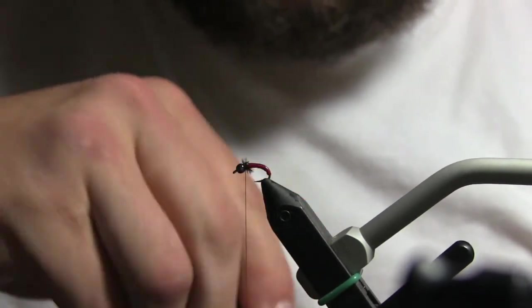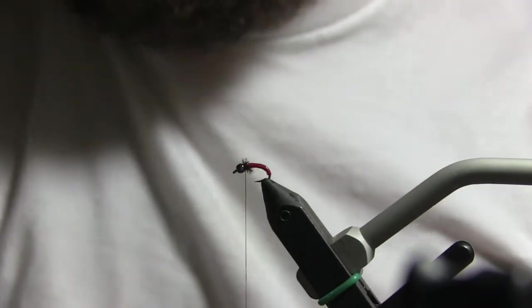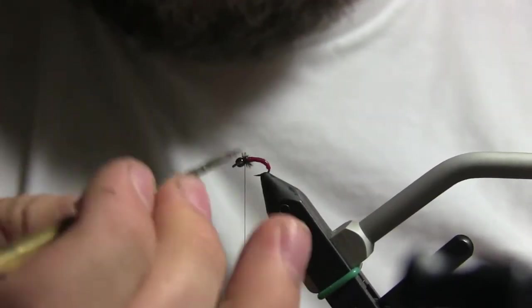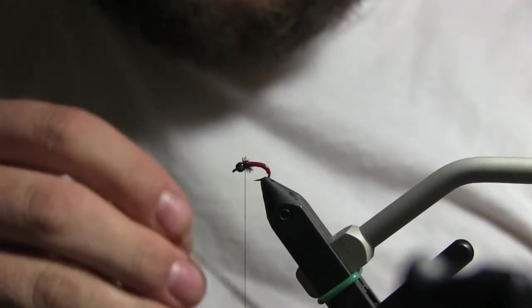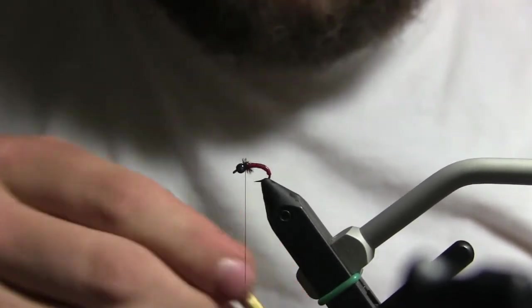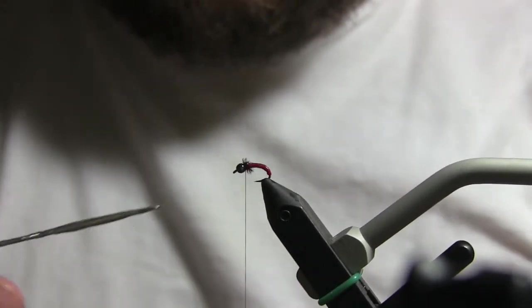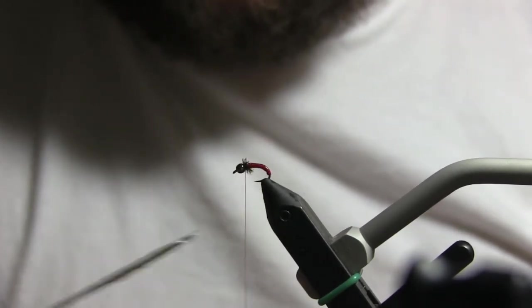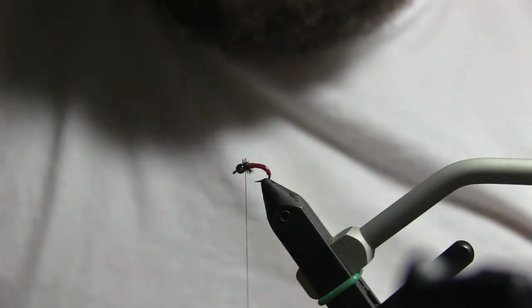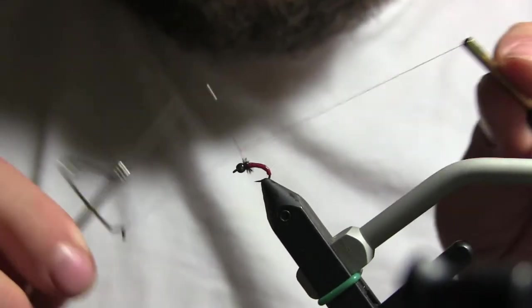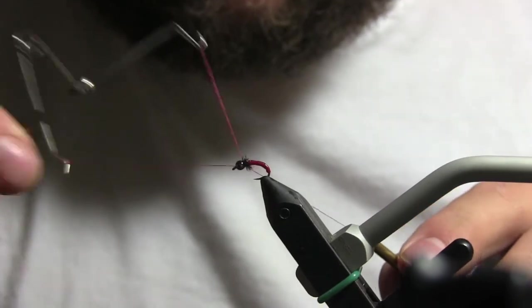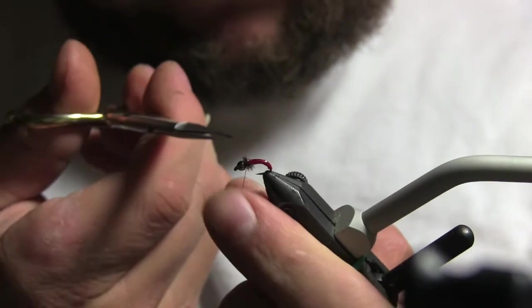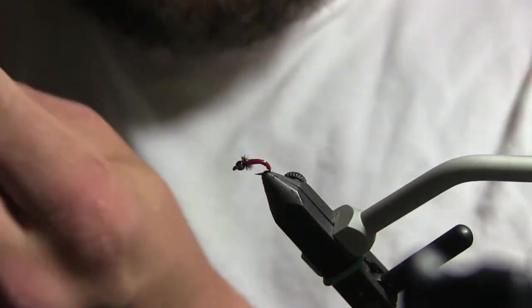Instead of dabbing your varnish on the fly head and getting it in that hurl, because it'll actually mat the hurl down. What I do is I just take a little bit out on your needle and then just rub it on the thread and you'll see it bubbling up on the thread. It kind of gets there and then whip finish. There you go.